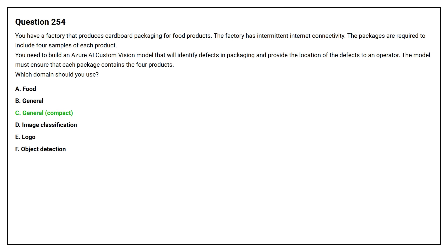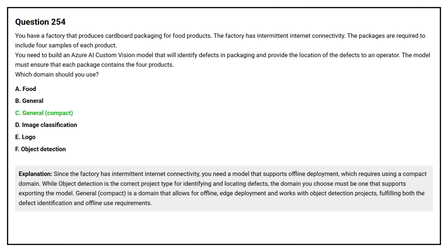The correct answer is Option C, General Compact. Since the factory has intermittent internet connectivity, you need a model that supports offline deployment, which requires using a compact domain. While object detection is the correct project type, the domain must support exporting the model. General Compact is a domain that allows for offline edge deployment and works with an object detection project, fulfilling both the defect identification and offline use requirements.